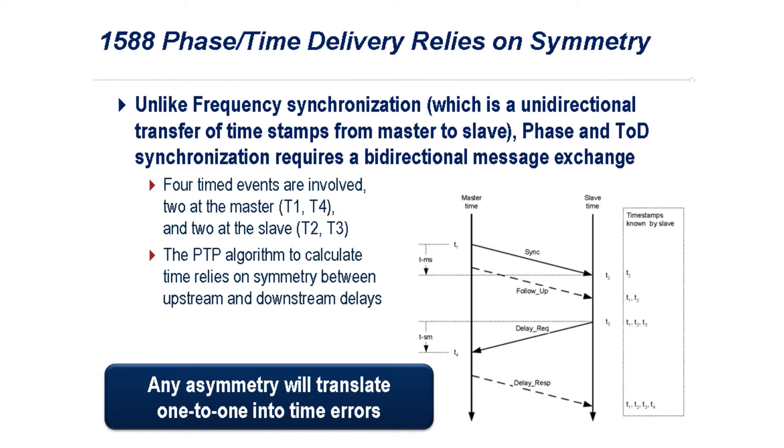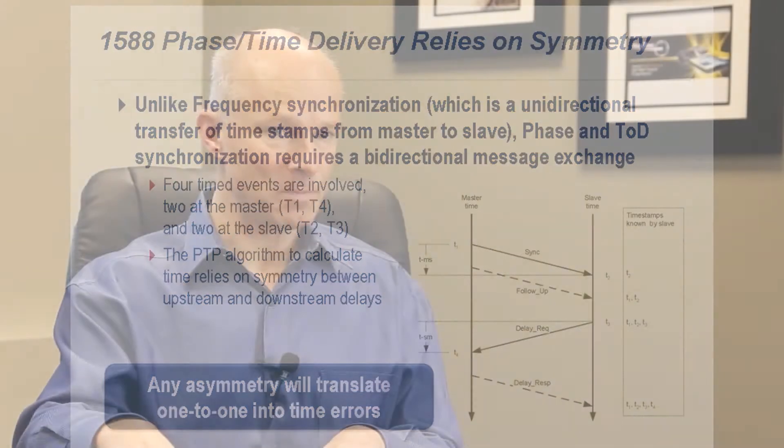There are two different elements being defined for on-path support: one is the boundary clock, which participates in the time-stamping, and the other is the transparent clock, which also participates in the time-stamping. These are the two different mechanisms to achieve the required accuracies.